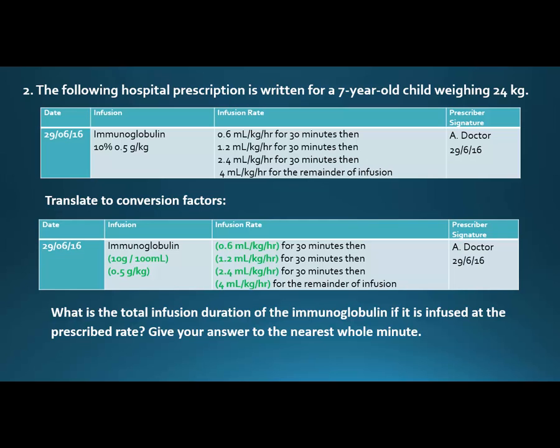The one conversion factor I created was reminding you what 10% really means. When you have a weight per volume, it's 10 grams per 100ml — so 20% would be 20 grams per 100ml — and then 0.5 grams per kilogram.